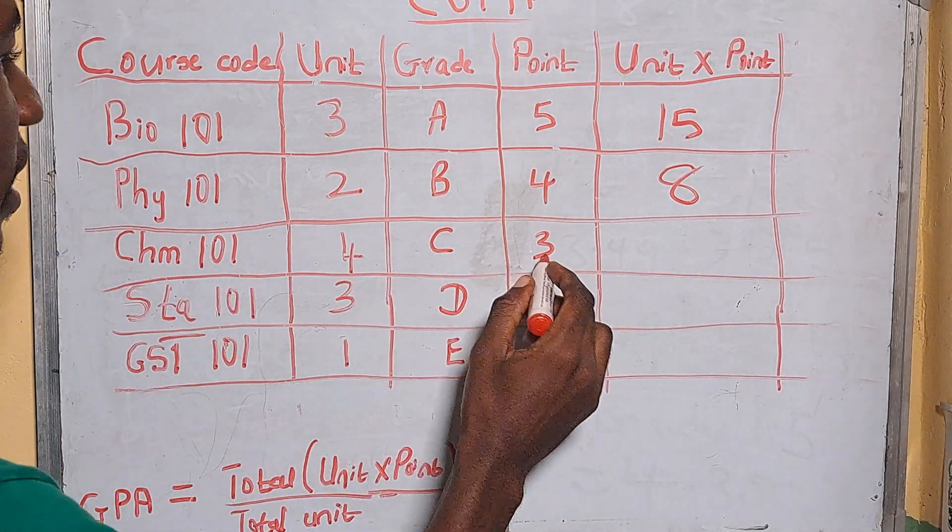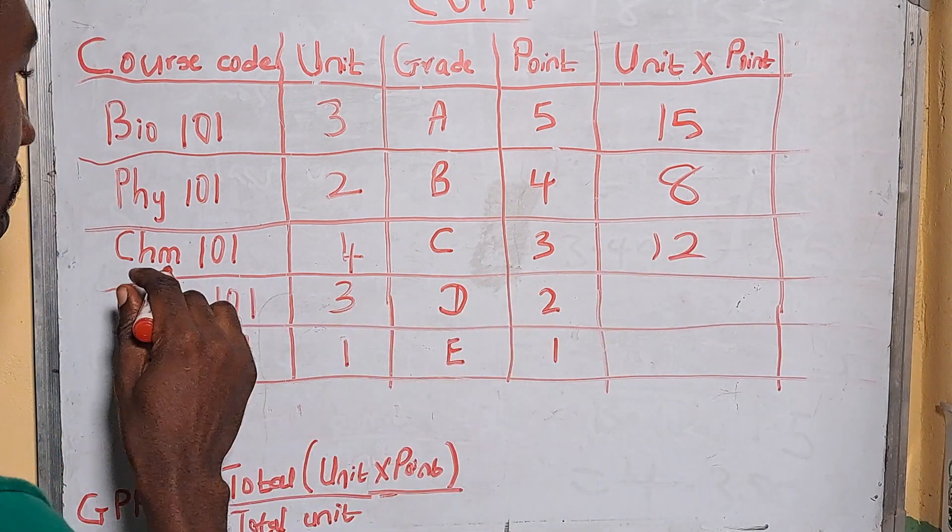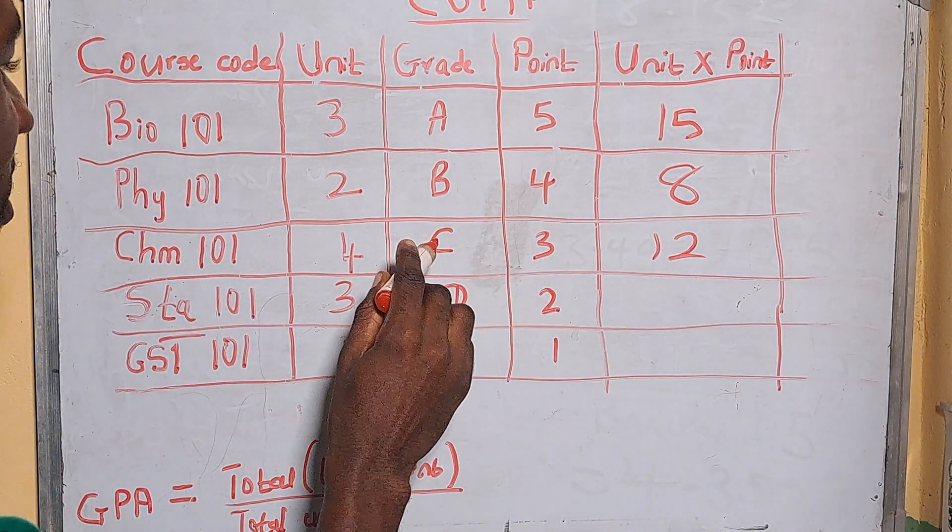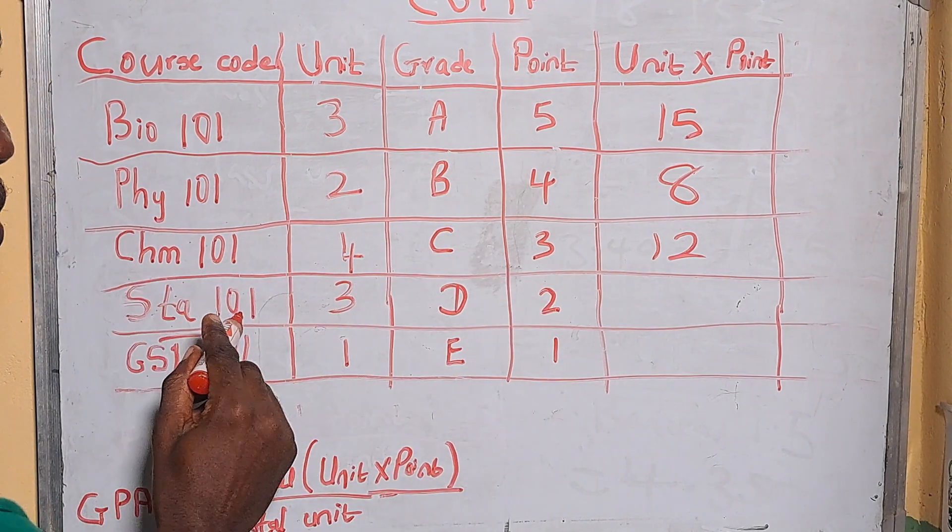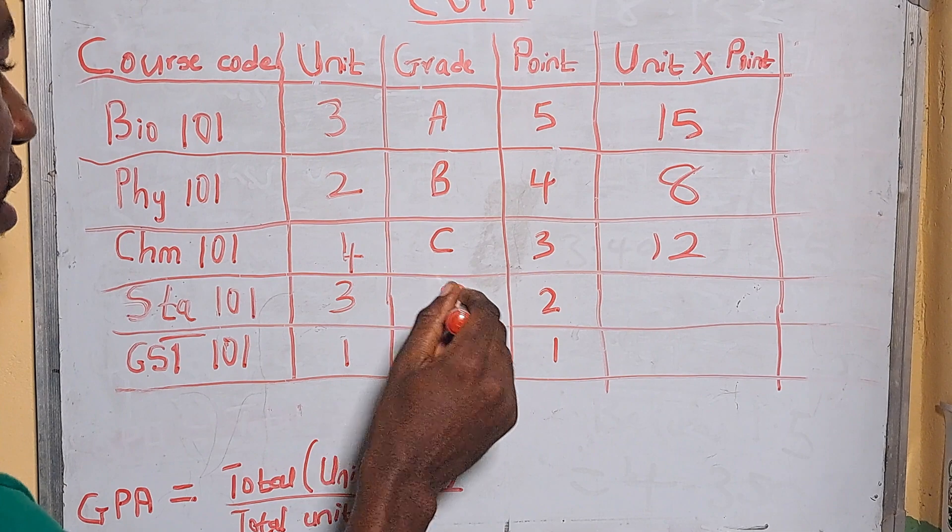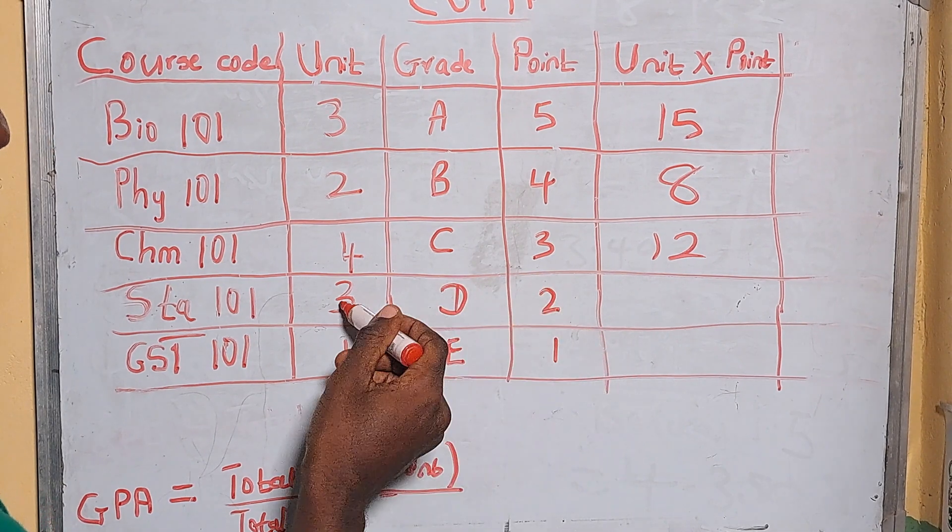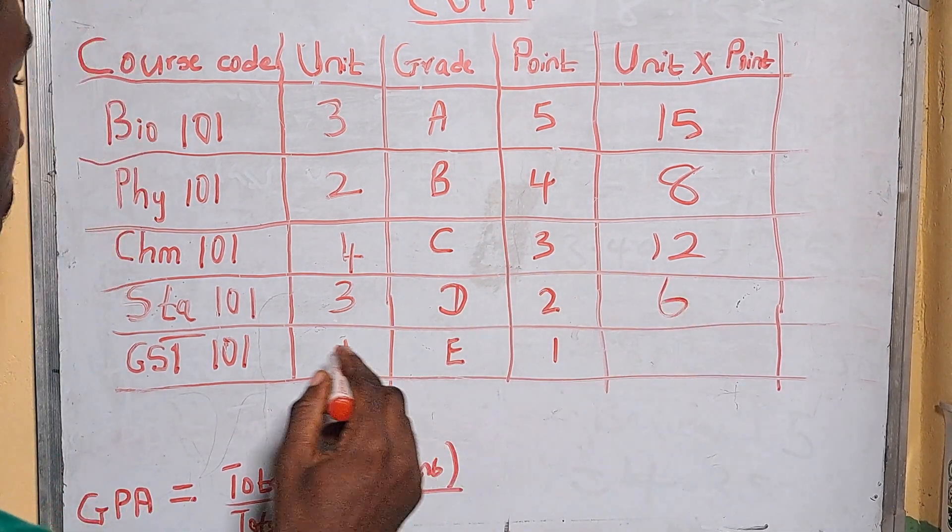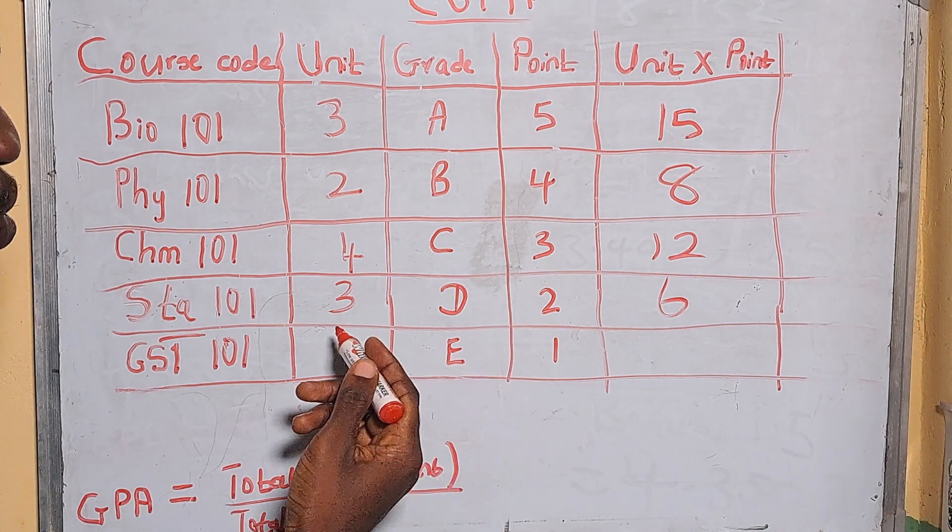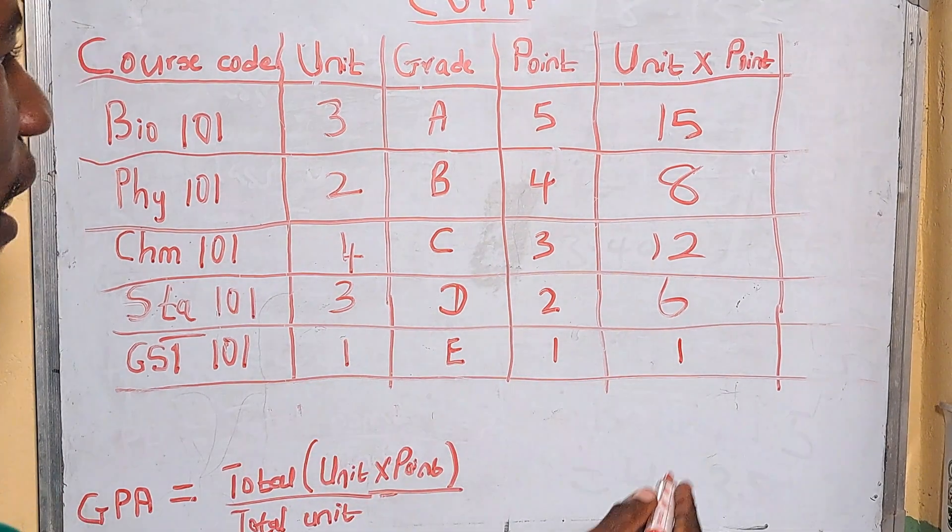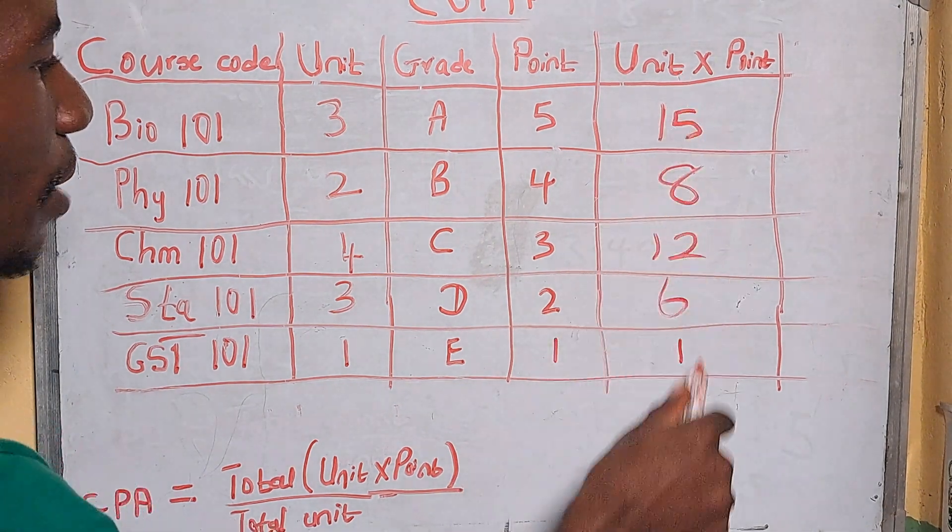Then multiply four by three which is 12 for Chem 101, because I got a C which is three points and the credit unit load is four. So for Stat 101 I got a D which is two points, so it's two multiplied by three is six. Then for GST 101 which is one point because I got an E, it's one by one which is one.